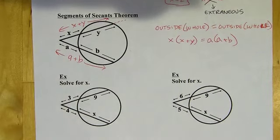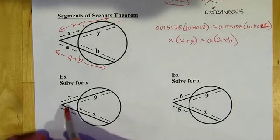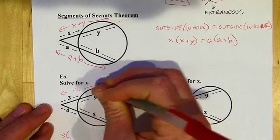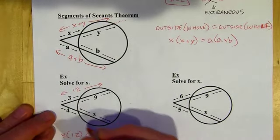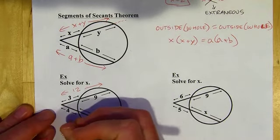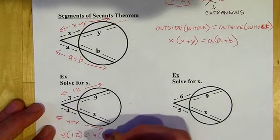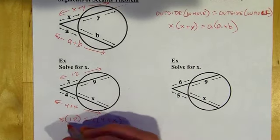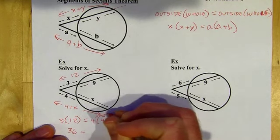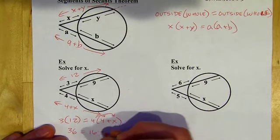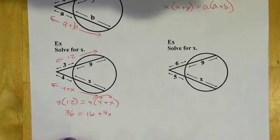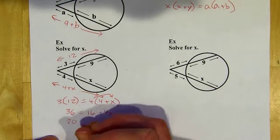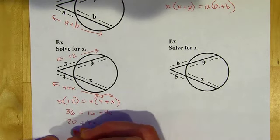Let's try it out. The part on the outside is 3, and the whole thing is 12 — not 9. So 3 times 12 equals 4, the part on the outside, times the quantity 4 plus X. That's 36 equals 16 plus 4X. Subtracting 16 from both sides gives 20 equals 4X, divide by 4, and X equals 5.